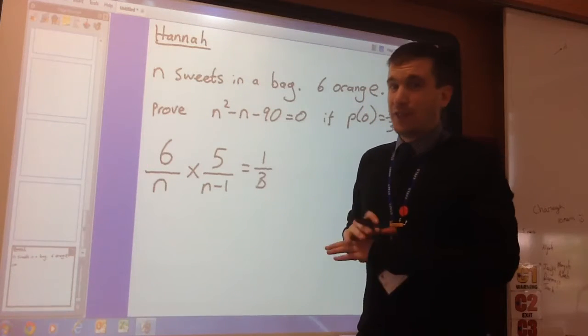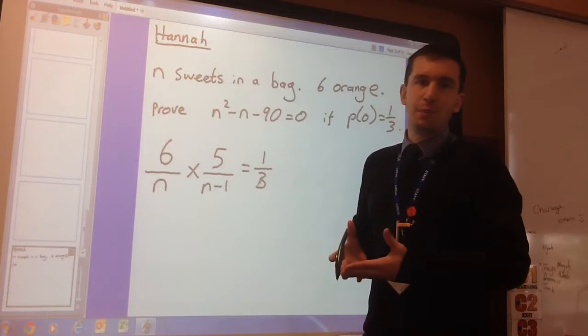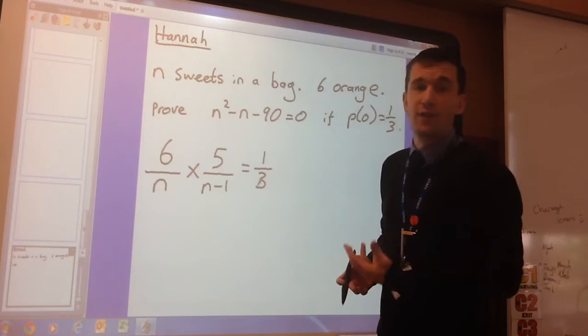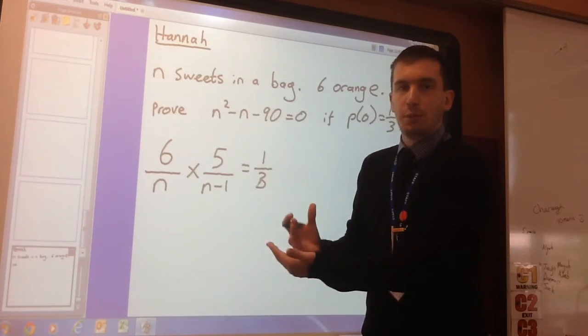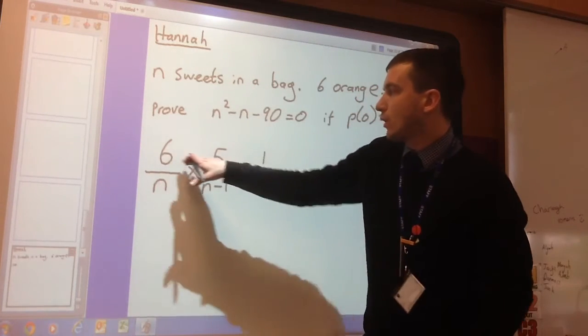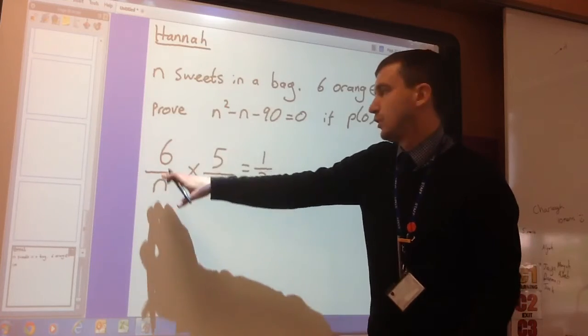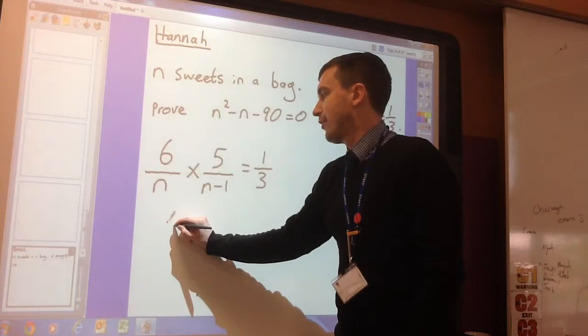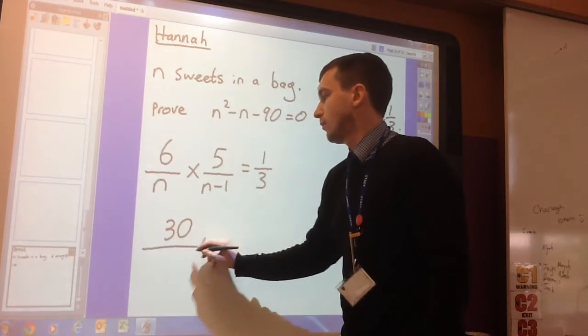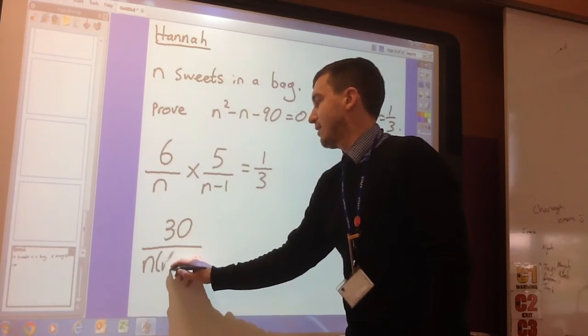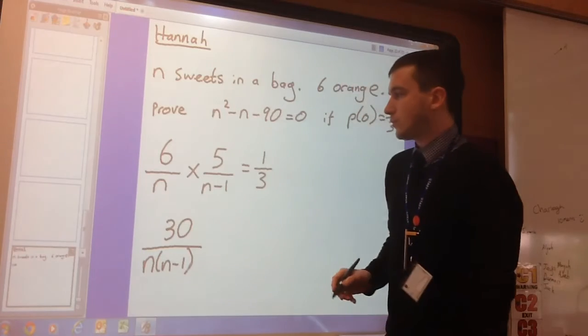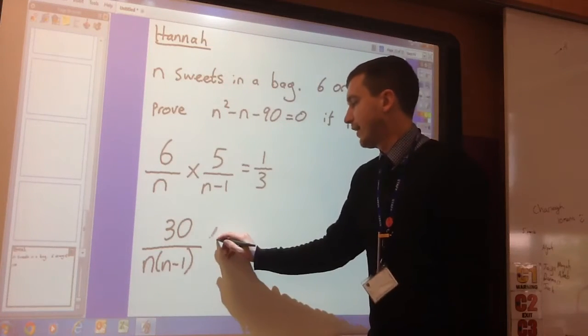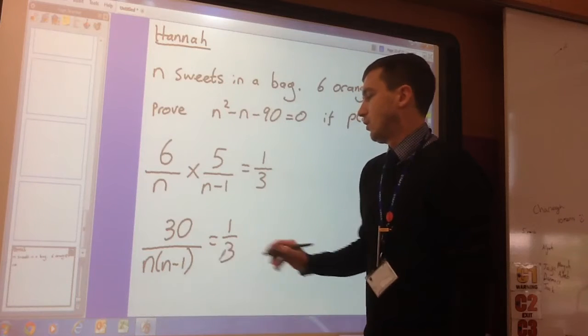So that in itself is very difficult. Now we've got to simplify fractions which include algebra. That is another very difficult skill. When you are multiplying fractions, you times the top by the top, the numerator by the numerator and the denominator by the denominator. So we end up there with 30 and then N brackets N minus one. So I've just put them together, I've not expanded them just yet. And that equals one third.